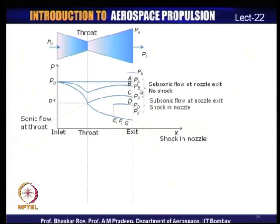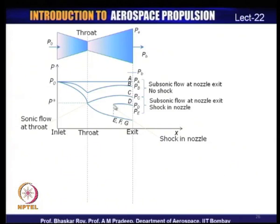If back pressure is reduced further, after the throat the static pressure continues to drop up to a point where there is a sudden increase — due to the occurrence of a shock in the diverging section of the nozzle. After this shock, the flow becomes subsonic, and static pressure rises again as in subsonic flow.